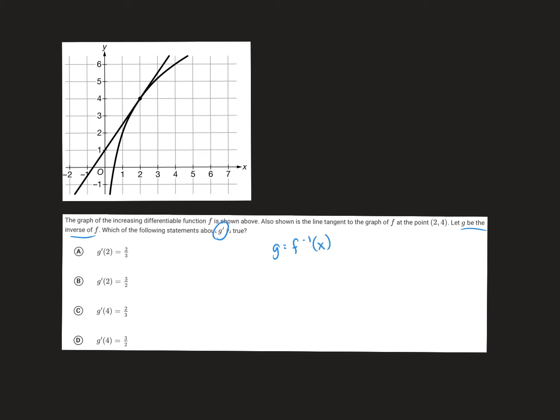We talked about in an earlier section that we had a formula for the derivative of an inverse. When we have the derivative of an inverse, it's 1 over f prime of f inverse of x. So what I want is to find 1 over f prime of f inverse of x.